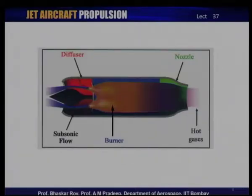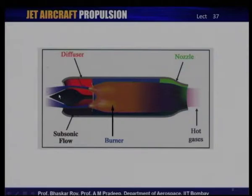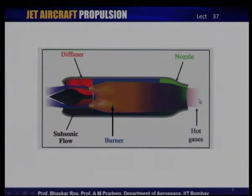Let us take a look at a color picture of what a ramjet looks like during operation. It typically has flow coming through the intake system with a central spike or bullet which negotiates the incoming supersonic flow. The flow then undergoes supersonic diffusion and then subsonic diffusion. At the end of the diffusion process there is a burner, and through the burner the flow is released through the nozzle in hot gases for creation of thrust.